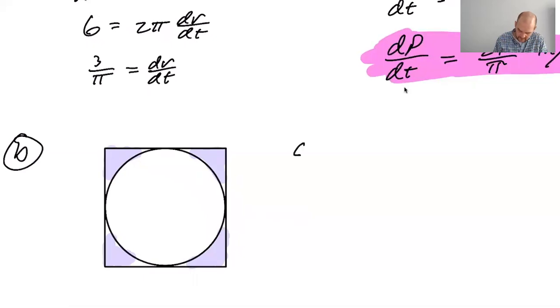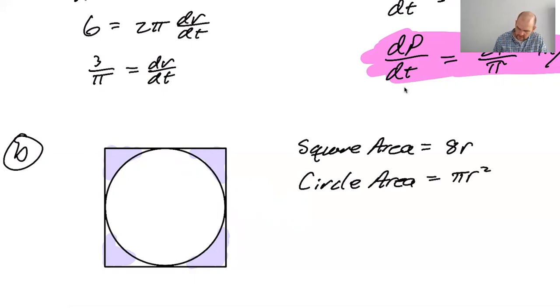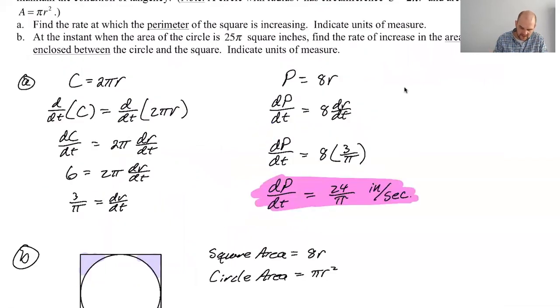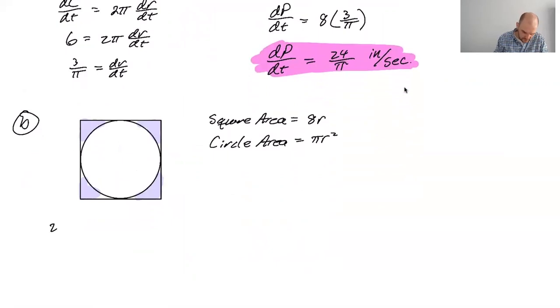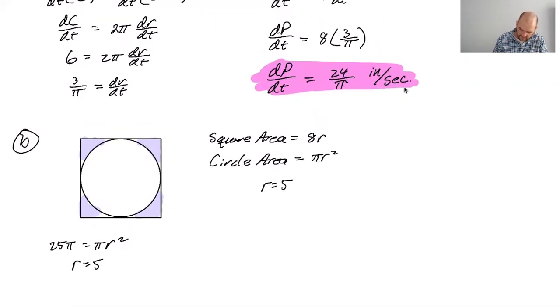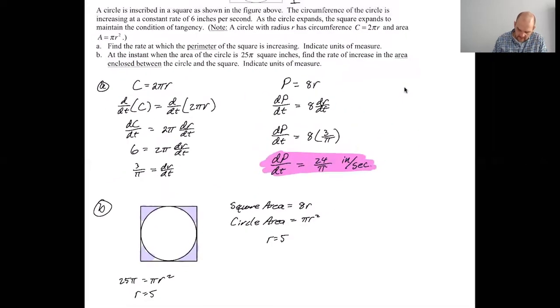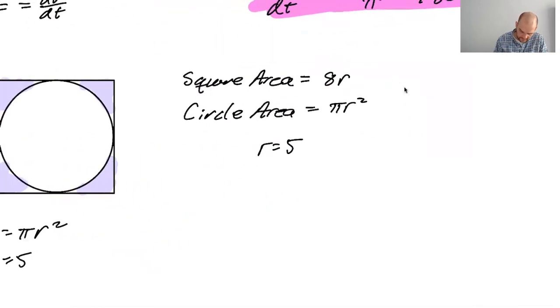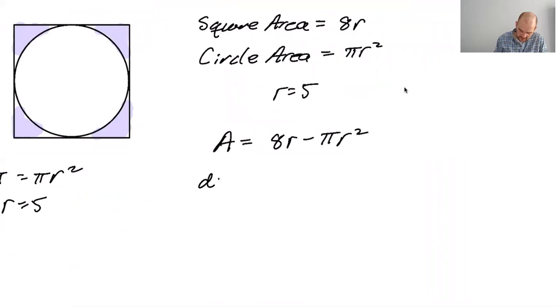So what is that area? The square area we already have said is eight R. The circle area is going to be πR². We're talking about the instant when the circle has an area of 25π. So I'll show the work, but 25π equals πR². So R is definitely five. And we're trying to find the rate of change of increase in the area.